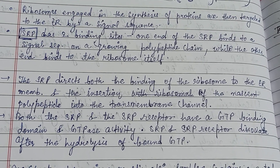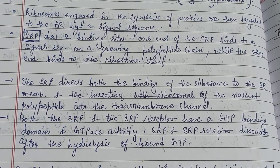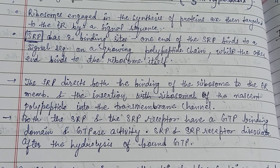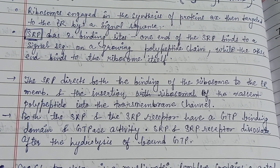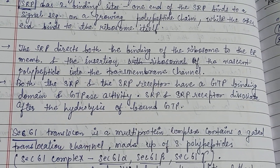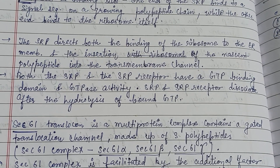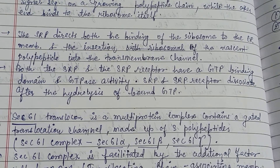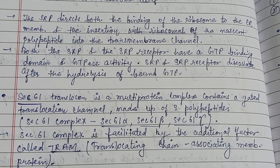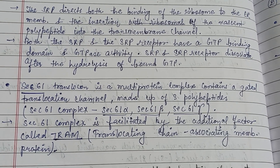SRP — the signal recognition particle — has two binding sites. One end binds with the polypeptide chain and the other binds with the ribosome. SRP, which is present in the cytosol, directs both the binding of the ribosome to the ER membrane and the insertion of the nascent polypeptide into the transmembrane channel.